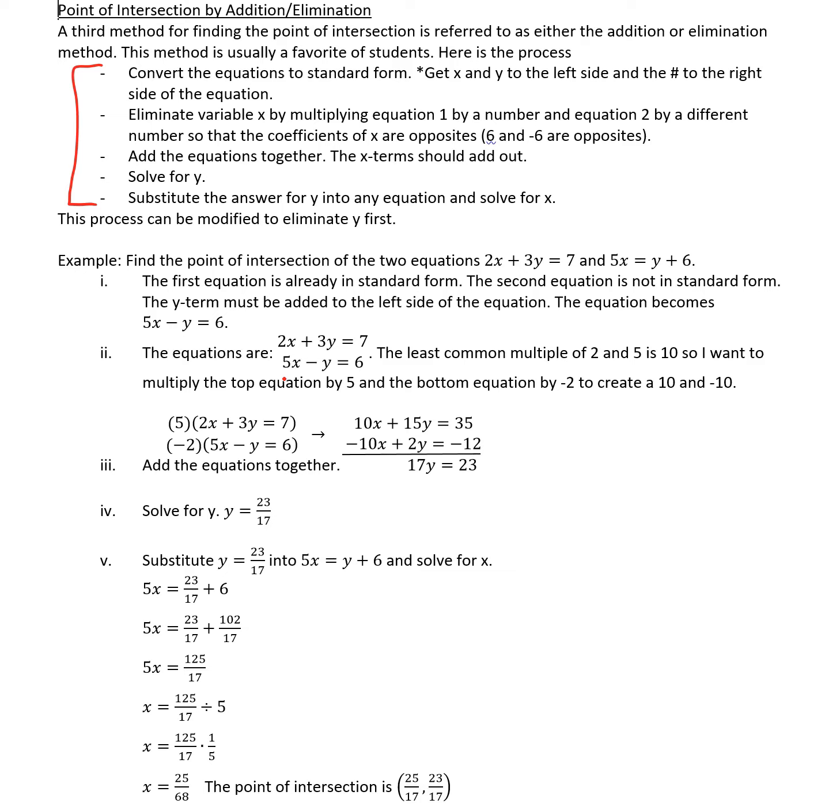Now remember the entire equation is multiplied by 5. So down below you'll see I have 5 and then a parenthesis around the entire equation. That becomes 10x plus 15y equals 35. And then the second equation is multiplied by negative 2. So the second equation becomes negative 10x plus 2y equals negative 12. At this point we add the like terms up and down. So we add 10x and negative 10x. We see they subtract out. We add 15y and 2y to make 17y. And we add 35 and negative 12 to make 23.